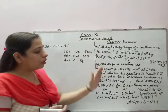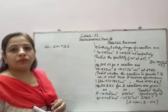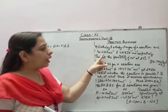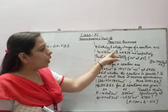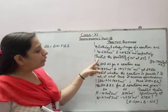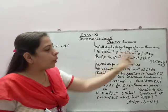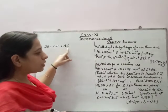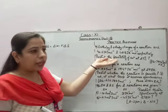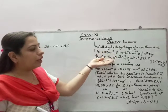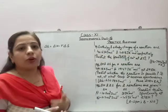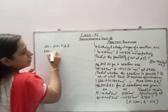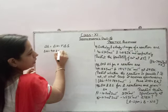Now on the basis of this, we are going to solve some questions to clarify further. Starting with the first question: enthalpy and entropy changes of a reaction are given. We have to predict the feasibility of the reaction at 27 degree Celsius. Delta H is given, temperature is given, delta S is given. We have to find whether the reaction is spontaneous or not. If the value of delta G is positive, then the reaction is non-spontaneous.